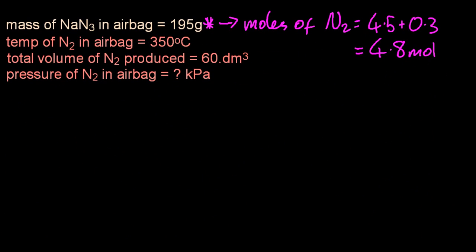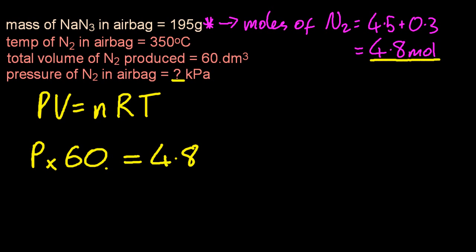All right, tidy up a bit. So we have to assume that nitrogen is an ideal gas. That's the only assumption you can make in IB. So PV equals NRT. So the volume 60 from the question, number of moles. I just worked that out. Gas constant, 8.31 in the data booklet.